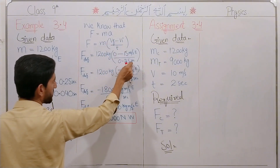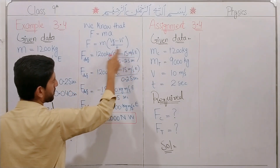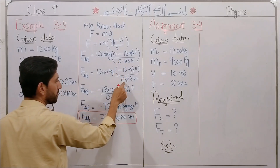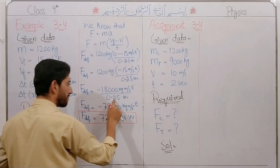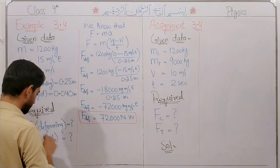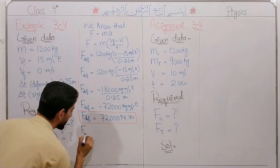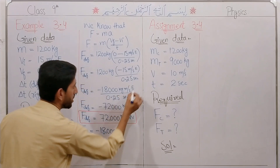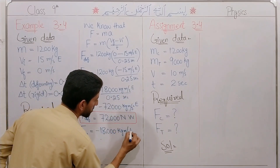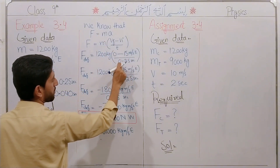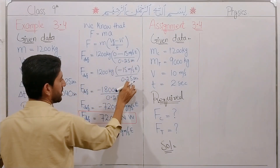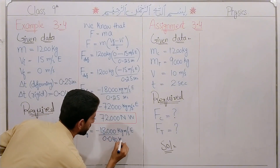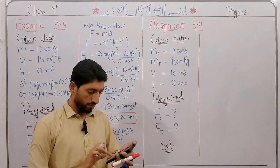The time for the rigid body is 0.040 seconds. The change in time is different. The force for the rigid body: using delta momentum divided by delta time — that is minus kilogram meter per second divided by 0.040 seconds — we divide to get the result.